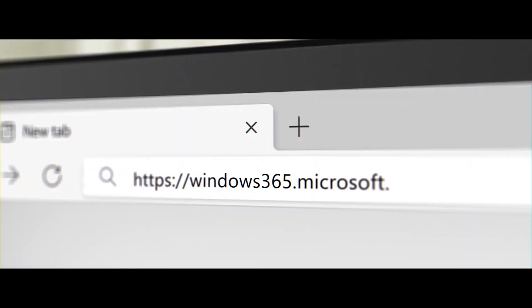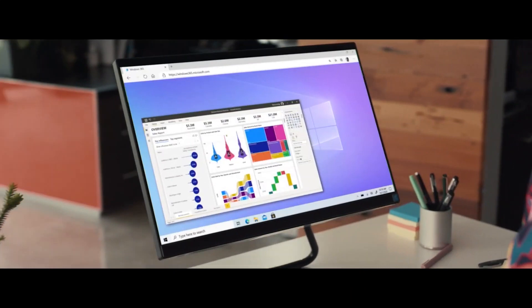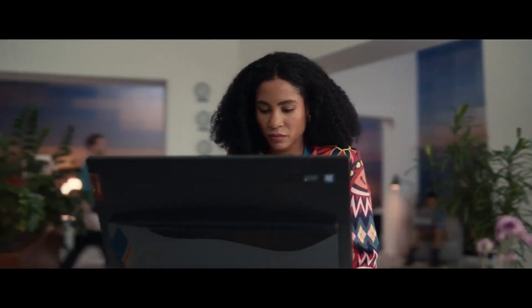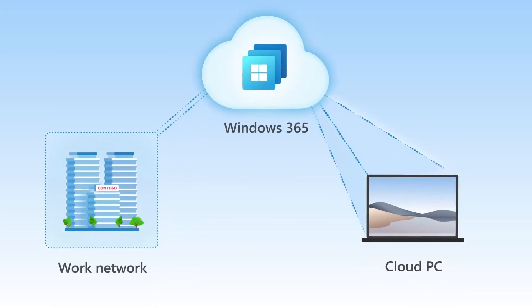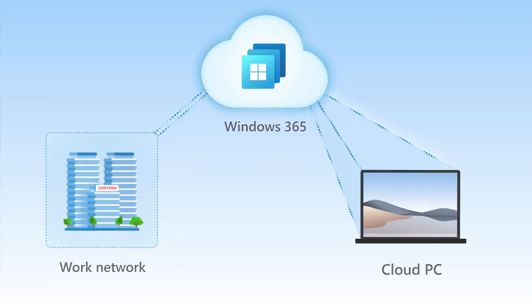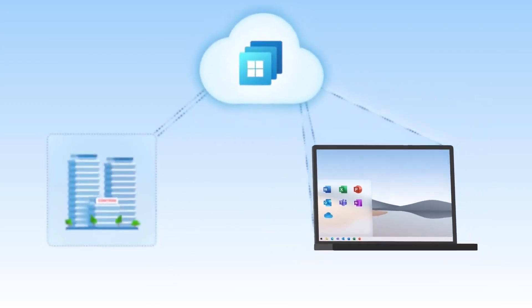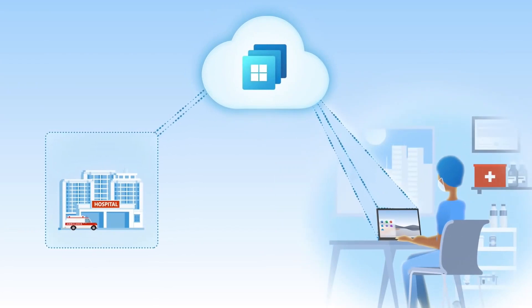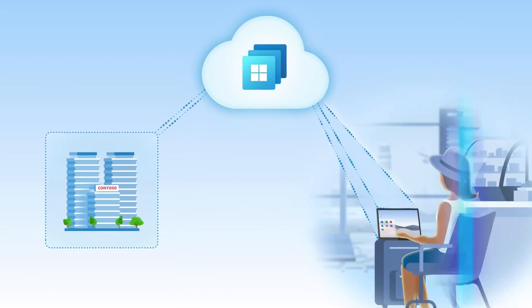All you need is your device, an internet connection, and a web browser or Remote Desktop application. With Windows 365, we can access desktop OS such as Windows 10 and later Windows 11, along with desktop applications. Our experience using applications is totally the same as our regular desktop experience. Moreover, when you disconnect the cloud PC and reconnect some other time, your desktop is kept just like the time you left it.